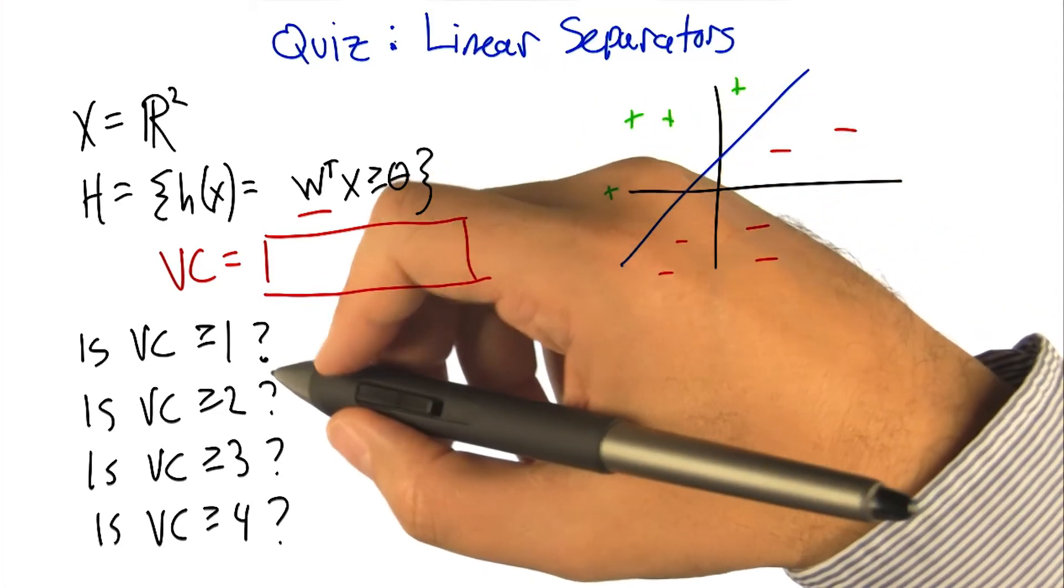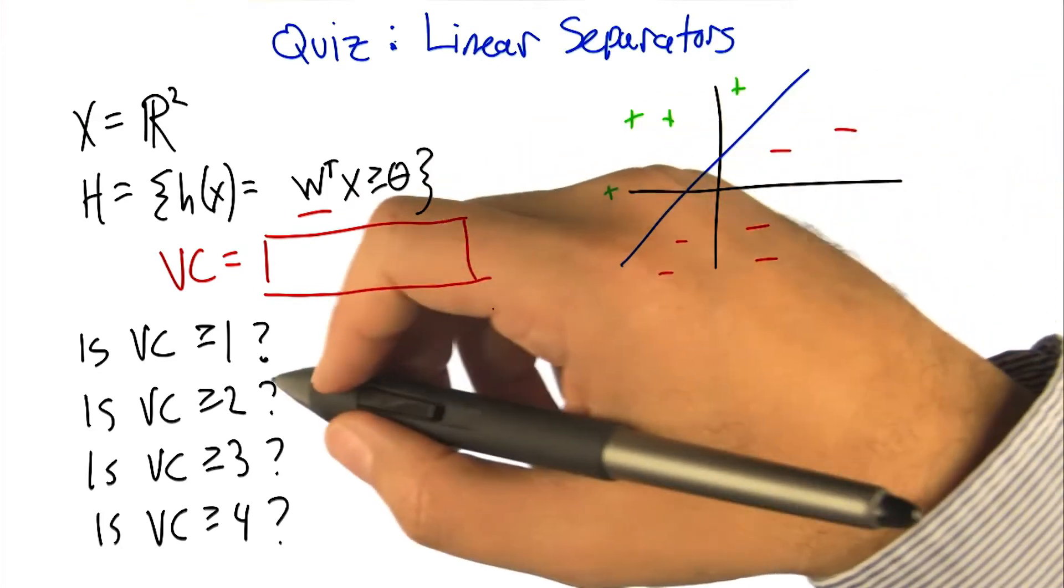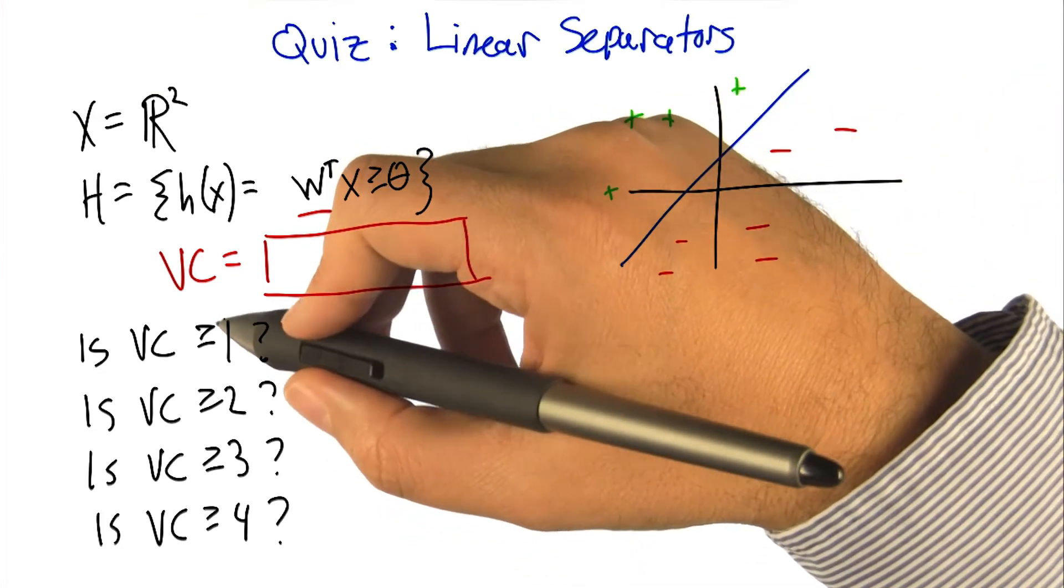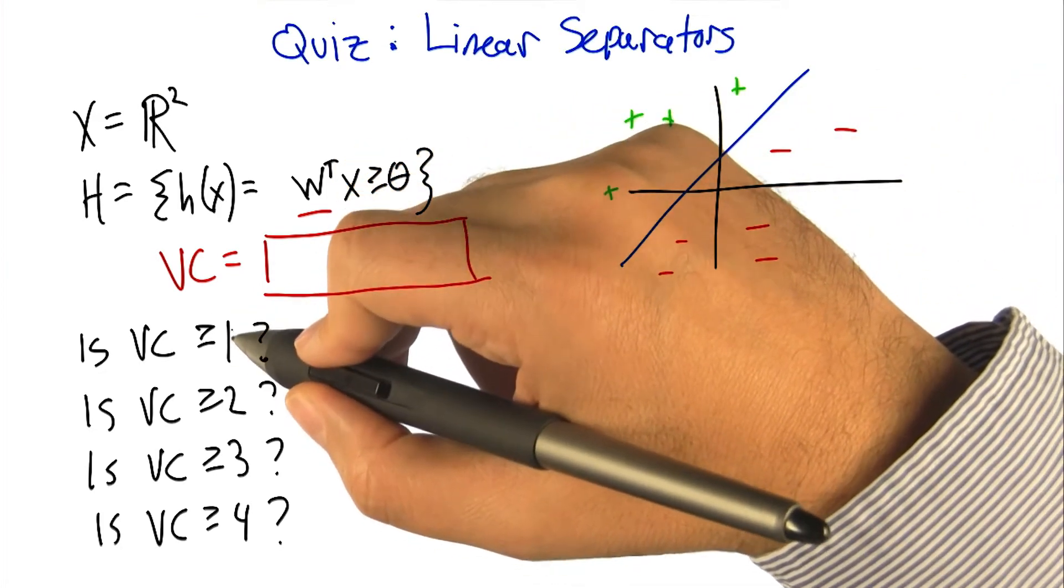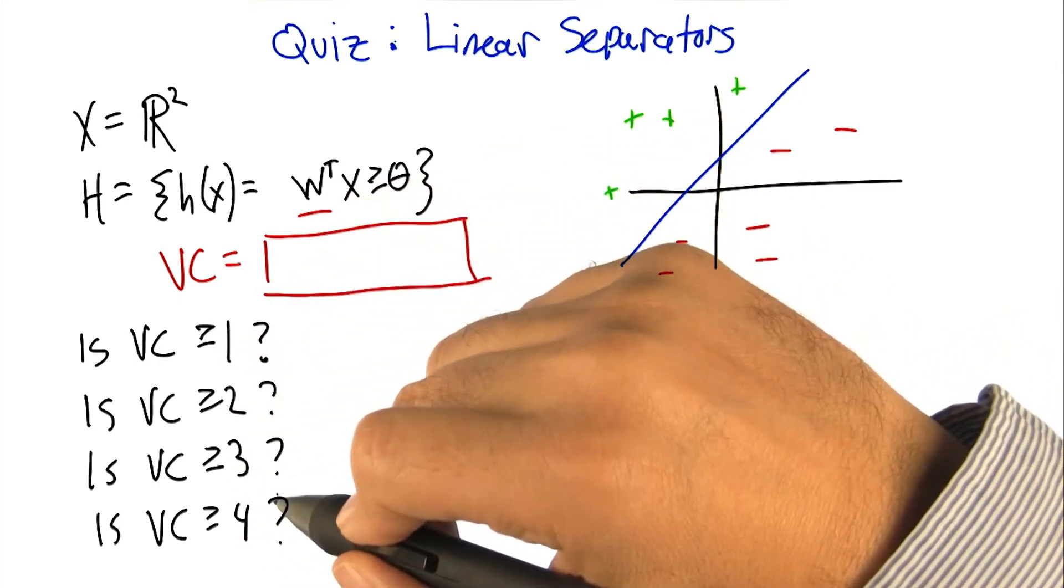All right, so we're back in again. We're going to attack it the way that you attacked the previous ones, where we're going to ask kind of systematically: is the VC dimension greater than or equal to 1, 2, 3, 4, by giving examples until we just can't anymore.